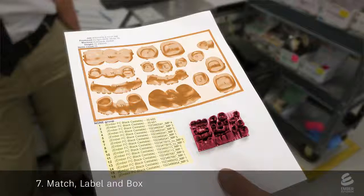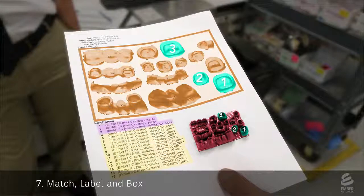For example, the image labels crowns number 1, 2, and 3, which match these crowns on the print and these cases for a patient.